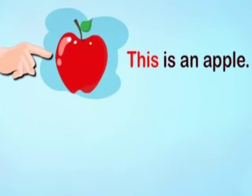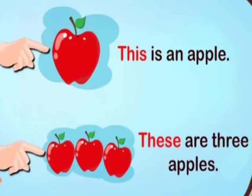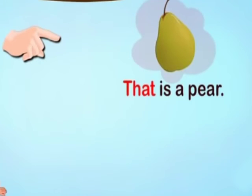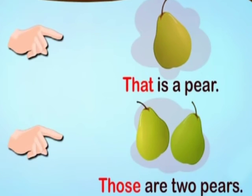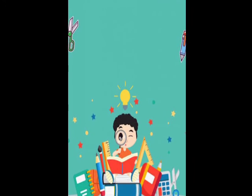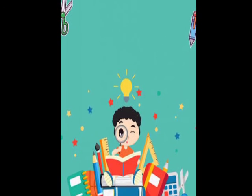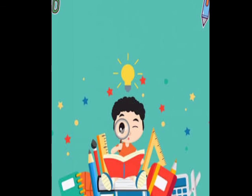Let us revise it again. This is an apple. These are three apples. That is a pear. Those are two pears. So I hope you all understood your chapter number 13 that is this,